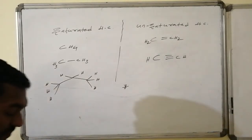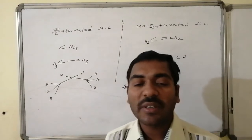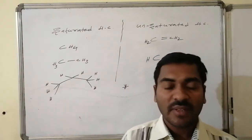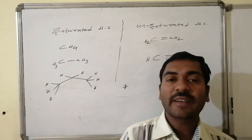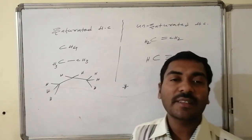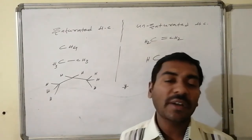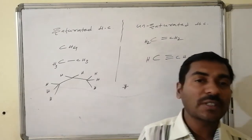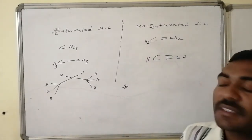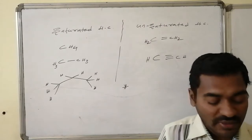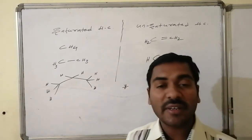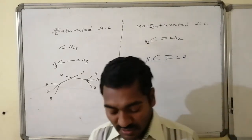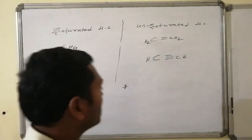A saturated hydrocarbon is one where all carbons are sp3 hybridized and all C-C connectivities are single bonds — no double or triple bonds. These are saturated hydrocarbons. Unsaturated hydrocarbons are those where carbon is connected to another carbon by at least a double bond or a triple bond.